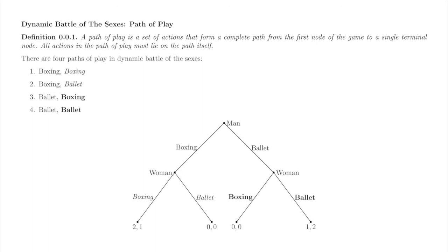Now we come to the last of the three subjects of this video: the path of play. We'll first define a path of play and give some examples. Informally, and perhaps more usefully, the path of play is the play of the game that you would observe if you watched it from beginning to end. There are four paths of play in Dynamic Battle of the Sexes — there is a unique path of play leading to each terminal node.